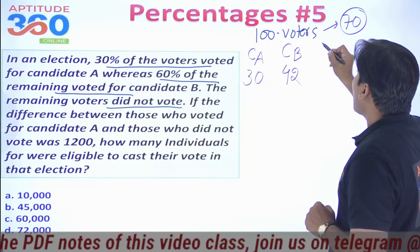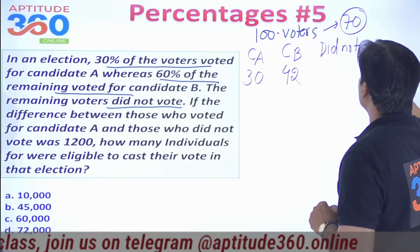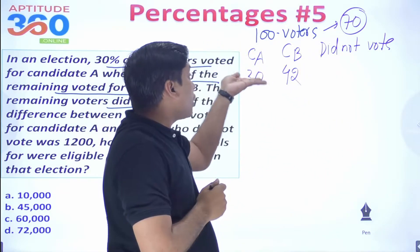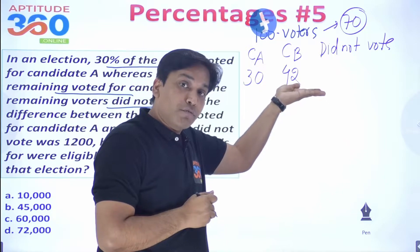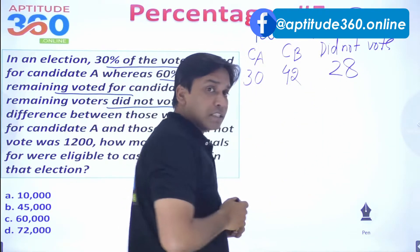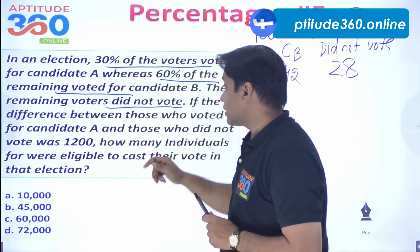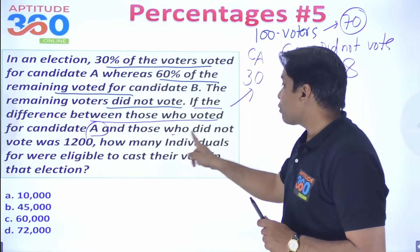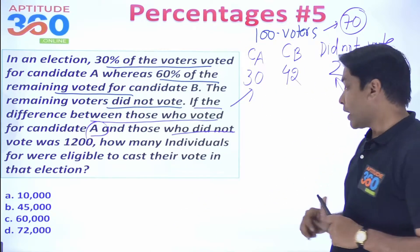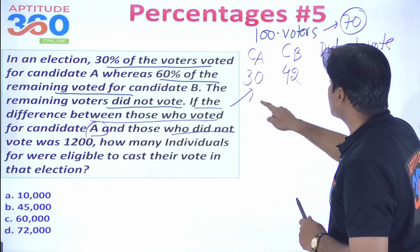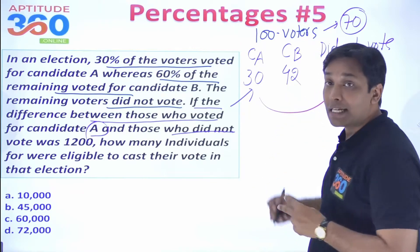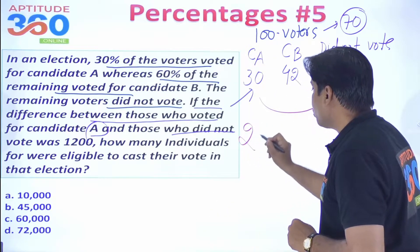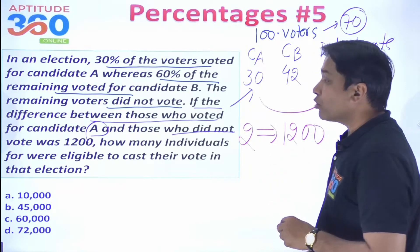Those who did not vote: 100 total minus 30 (candidate A) minus 42 (candidate B) = 28 people who did not vote. The problem says the difference between those who voted for candidate A and those who did not vote equals 1,200. In our simplified model that difference is 30 minus 28 = 2.